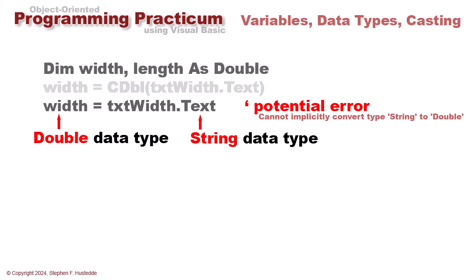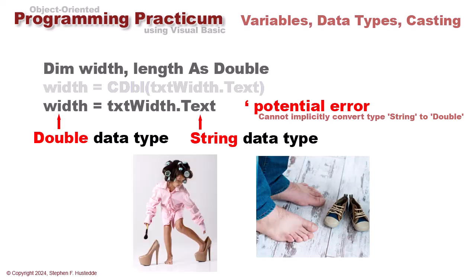We're going from one data type—trying to fit a small foot into a large shoe, or even more difficult, trying to fit a large foot into a small shoe. The small foot into a large shoe is not an issue. It will fit; it may not be the most comfortable walking, but it will work. That's called implicit conversion.